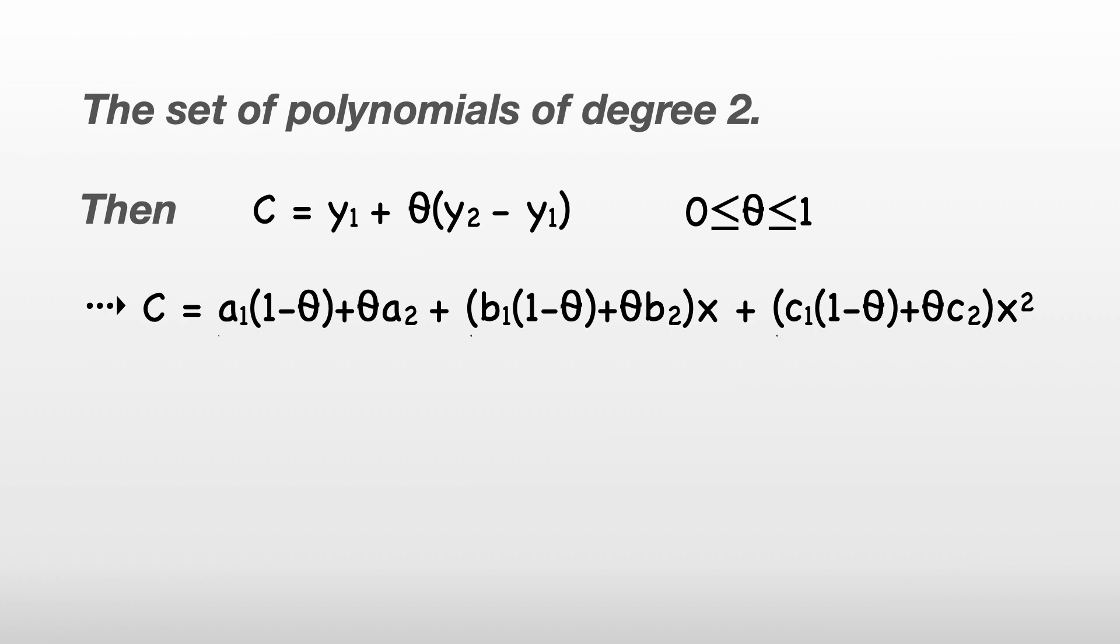But notice these three parts are just numbers, so we can rewrite c as a plus bx plus cx squared, where a, b and c are just the numbers from above. And we've shown that whatever this equation is, it's still just a polynomial of degree 2, and so it's still in our original set.